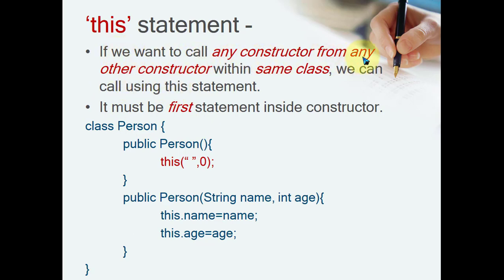If we want to call any constructor from any other constructor within the same class — this is important, within the same class — we can call using the `this` statement. This call is known as an explicit call for the constructor, and it must be the first statement inside that constructor. After this statement you can write multiple instructions, but this statement must come first.